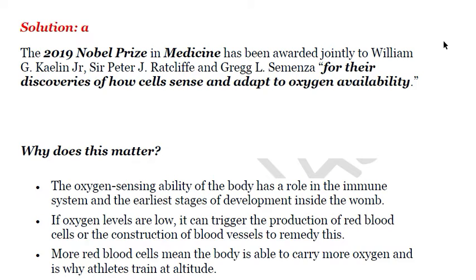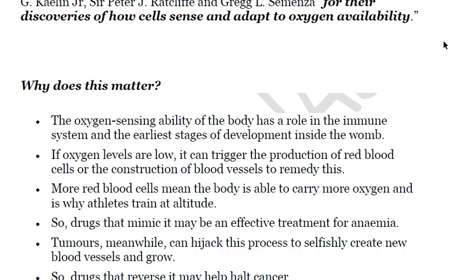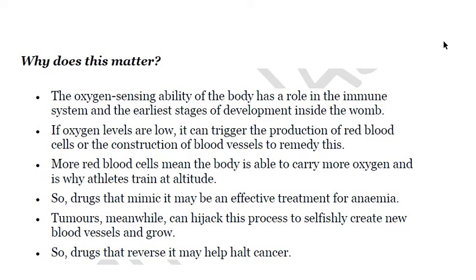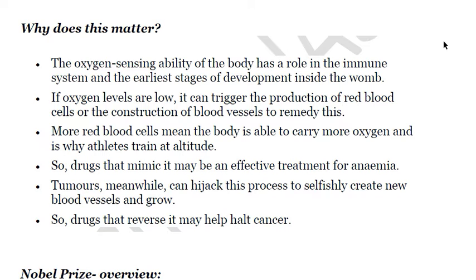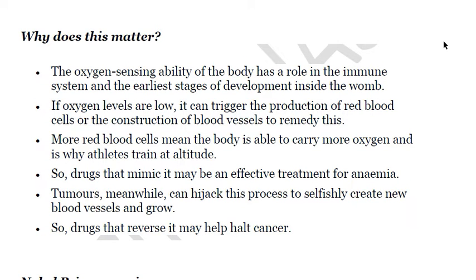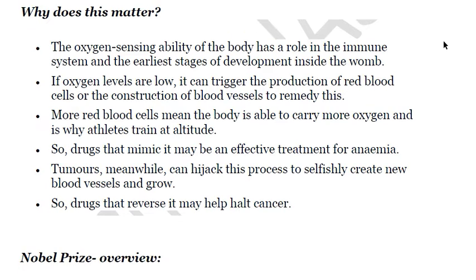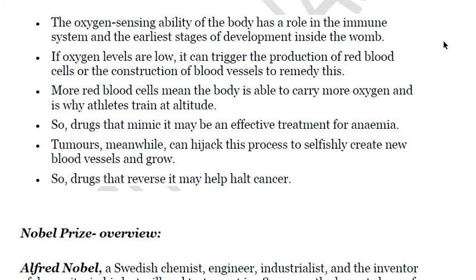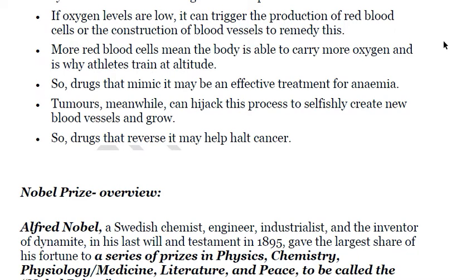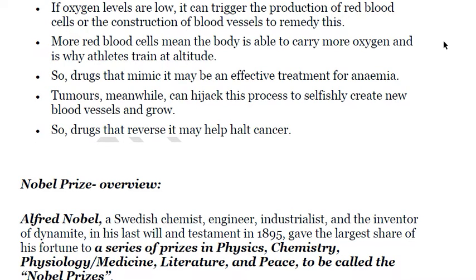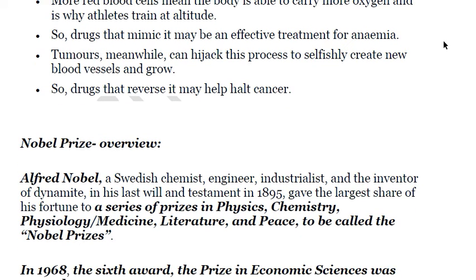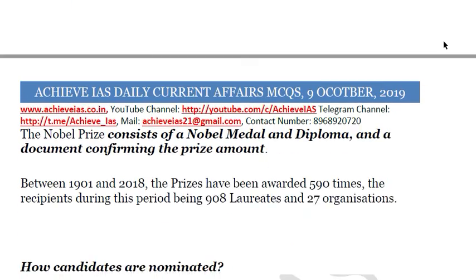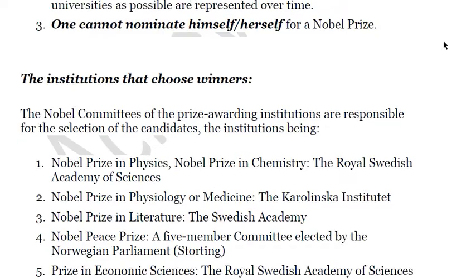The Nobel Prize in Medicine was awarded jointly to William G. Kaelin Jr., Sir Peter J. Ratcliffe, and Gregg L. Semenza for discoveries of how cells sense and adapt to oxygen availability. The oxygen-sensing ability of the body plays a role in the immune system and early stages of development. When oxygen levels are low, it triggers production of red blood cells and construction of blood vessels. Drugs mimicking this may treat anemia, while drugs reversing it may help fight cancer.